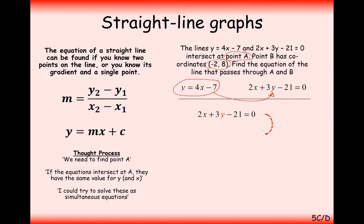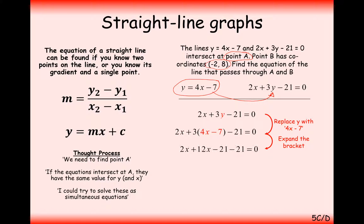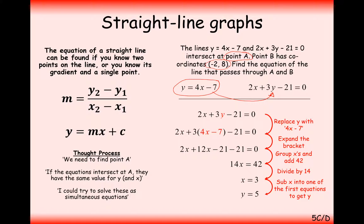In this case it's probably easier to substitute our expression for y — which is 4x minus 7 — into the second equation, replacing the y next to the 3. We then solve for x by grouping terms and dividing through by 14, giving x equals 2. To find the full coordinate for A, we plug x back into the easier equation and get y equals 5. So coordinate A is (2, 5).